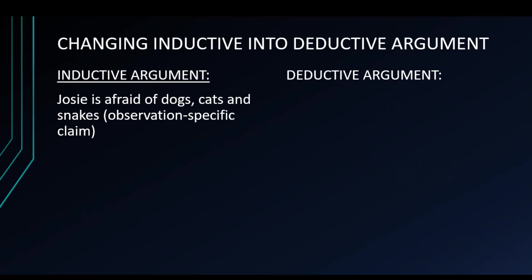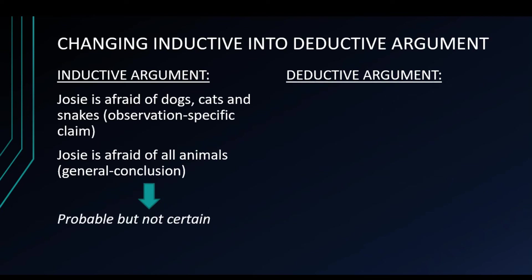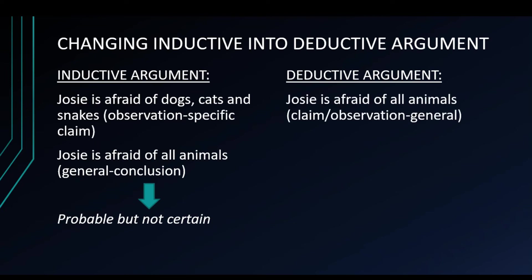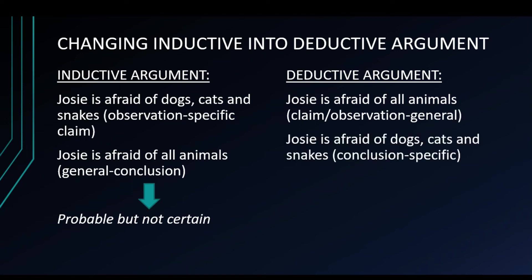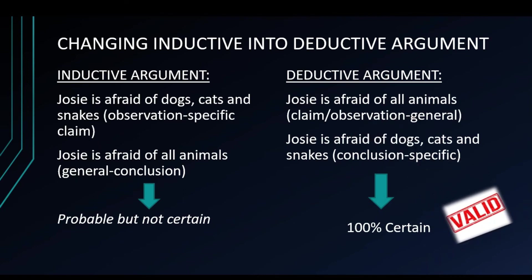Let's try and flip this into a deductive argument. In an inductive argument, the claim 'Josie is afraid of dogs, cats, and snakes' is specific, and the conclusion 'Josie is afraid of all animals' is general. Changing it into a deductive argument, it could look like this: 'Josie is afraid of all animals' becomes the general claim, and 'Josie is afraid of dogs, cats, and snakes' becomes the specific conclusion. Be mindful of valid and invalid, strong or weak arguments. In the deductive reasoning example, we reach a conclusion which is 100% certain, so we have a valid argument.